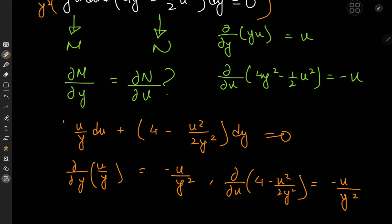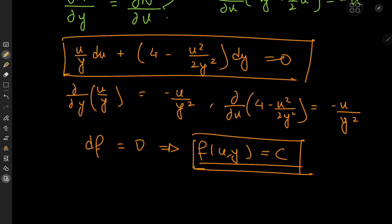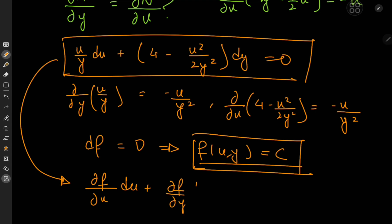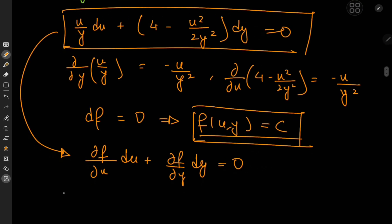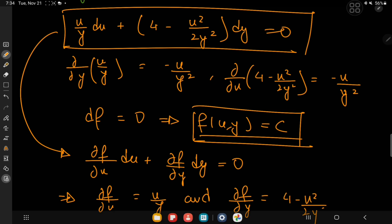We can write the exact equation in the form of the differential of some function being equal to zero — that is, f(u, y) equals a constant. Since it is exact, it is of the form (∂f/∂u) du plus (∂f/∂y) dy equals zero, meaning ∂f/∂u equals u/y and ∂f/∂y equals (4 minus u²)/(2y²).